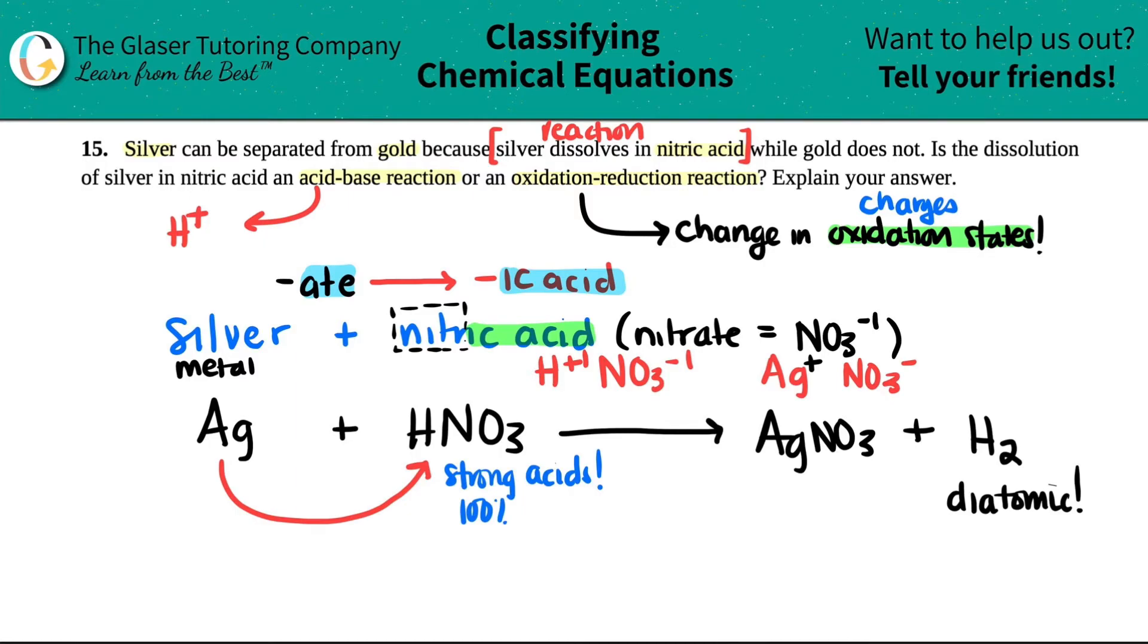Now, if we just quickly balance this, you'll see that we have two hydrogens. So I need to put a two here to balance that out. And then we have two nitrates. So that would put a two here. And then I have two silvers. So I have to put a two here.